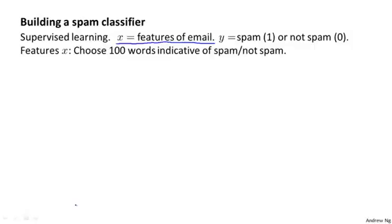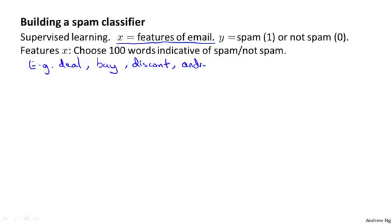Here's one way to choose features for our emails. We could come up with a list of maybe a hundred words that we think are indicative of whether an email is spam or non-spam. For example, if an email contains the word 'deal,' it's more likely to be spam; 'buy' — more likely spam; 'discount' — more likely spam. Whereas if it contains my name, 'Andrew,' maybe the person actually knows who I am and it's less likely to be spam. The word 'now' may be indicative of non-spam because I get a lot of urgent emails. Maybe we choose around a hundred words.